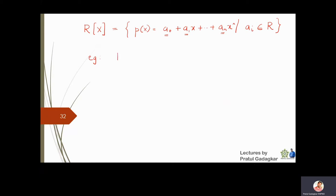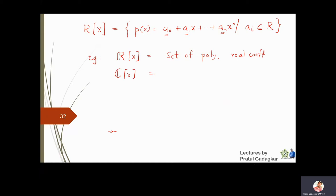For example, R[x] is the set of all polynomials with real coefficients. C[x] is the set of all polynomials with complex coefficients. For example, a polynomial like (2+i) + (3+5i)x^2 and so on — these are polynomials with complex coefficients.